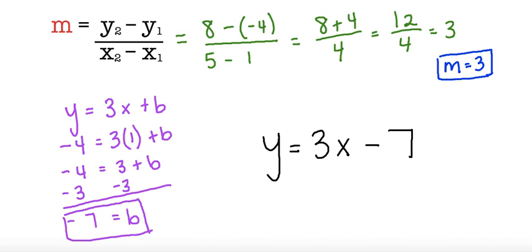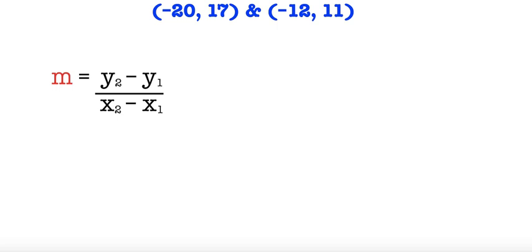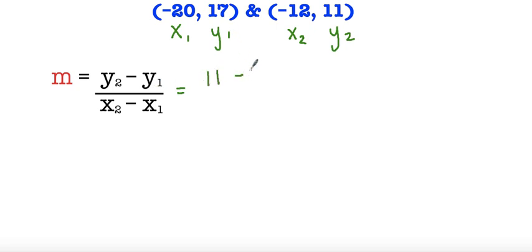So here we have another coordinate and we're going to do the same thing. The first thing I'm going to do is label our coordinates to make it a little bit easier. So negative 20 is x sub 1, 17 is y sub 1 — that's our first x and our first y. And then negative 12 is x sub 2, and 11 is y sub 2. Then all we have to do is substitute. So y sub 2 is 11: 11 minus 17 because that's y sub 1, over negative 12 minus negative 20.